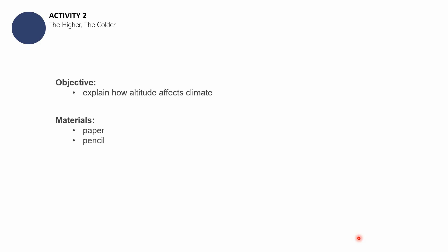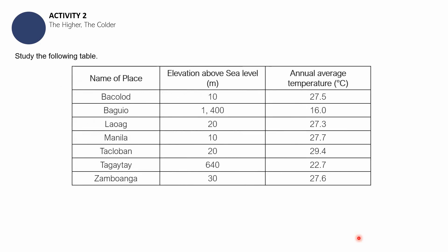The objective of this activity is that by the end, you should be able to explain how altitude — the higher a place is — affects its climate. Now, study the following table. The first column is the name of the place, the second column is the elevation above sea level in meters, and the last column is the annual average temperature of the place. I'll give you a moment to analyze this table.